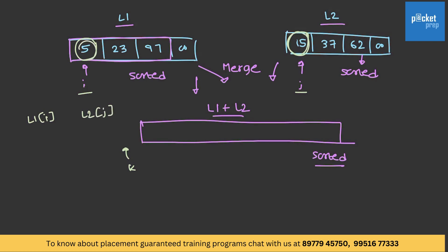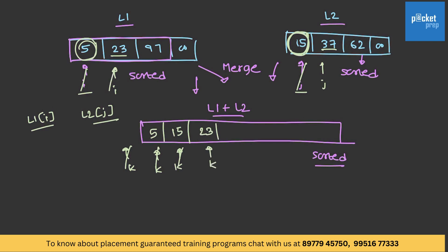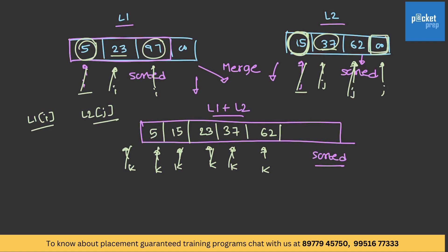Initially, we compare L1[i] and L2[j]. 5 and 15 are compared — 5 is less, so 5 is copied to the result and i is incremented. Now L1[i] and L2[j] are compared again: 15 is less than 23, so 15 is copied and j is incremented. 23 and 37 are compared — 23 is less, so 23 is copied and i is incremented. Now 97 and 37: 37 is written and j moves to 62. Again k is incremented; 62 is written as it is less than 97. Once all elements of one list are copied, the pointer moves to the last element.